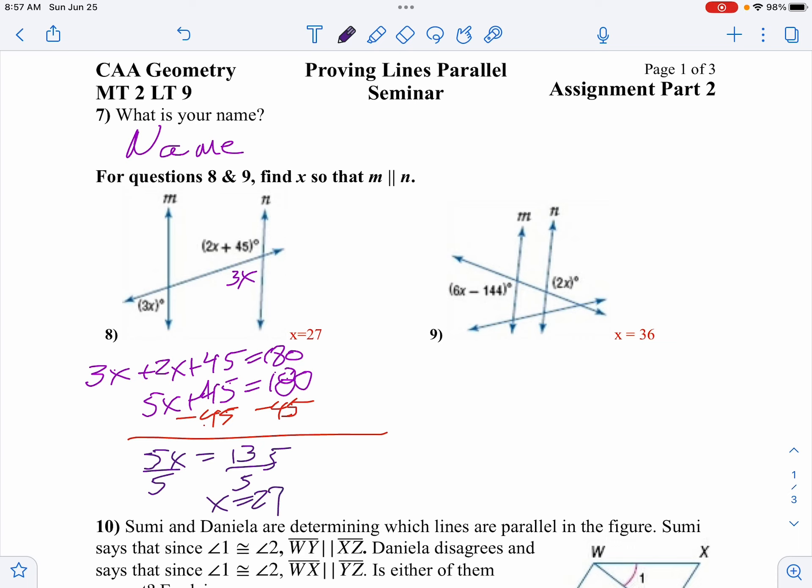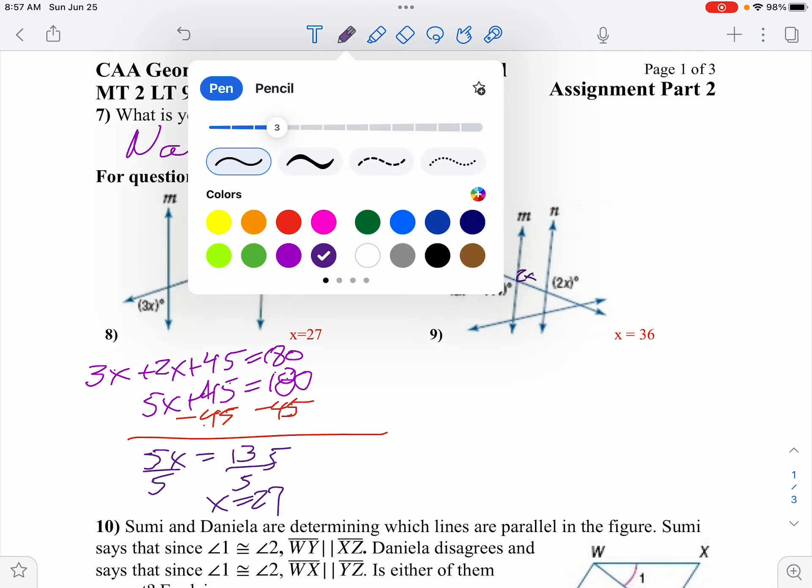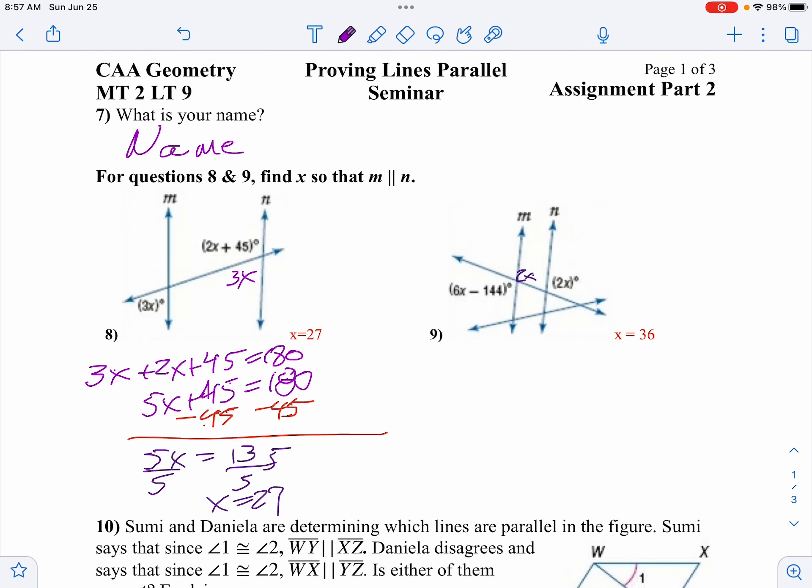We'll go through that same thing on problem number 9. Notice 2x would be corresponding. So we have vertical angles. The difference this time, instead of being supplementary, we know vertical angles are equal. 2x equals 6x minus 144.